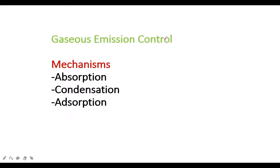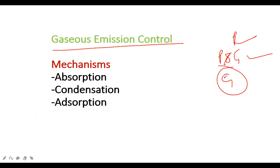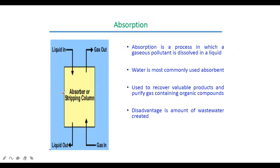For gaseous emission control specifically, mechanisms include absorption, condensation, and adsorption. In an absorption or stripping column, liquid comes in from the top and gas from the bottom. It is called a stripping column because the gas is being stripped of its pollutant by the solvent. Clean gas exits from the top and dirty liquid comes out from the bottom.